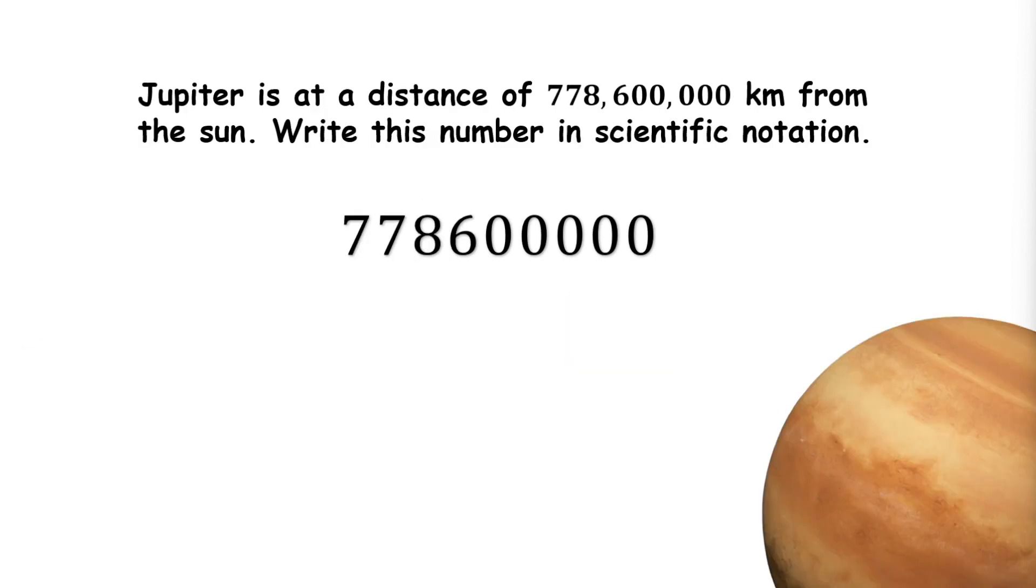Let's try another one. Jupiter is at a distance of 778,600,000 kilometers from the sun. Write this number in scientific notation. First, we need to place a decimal point to make this number between 1 and 10. Place it between the two sevens.